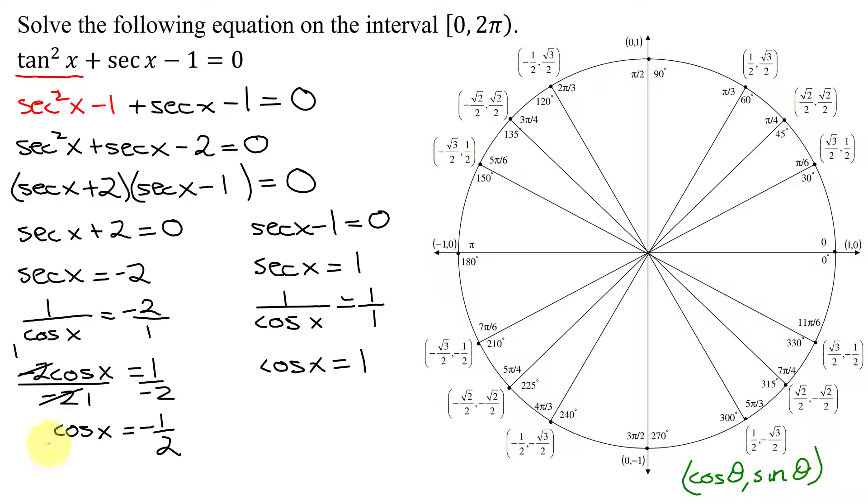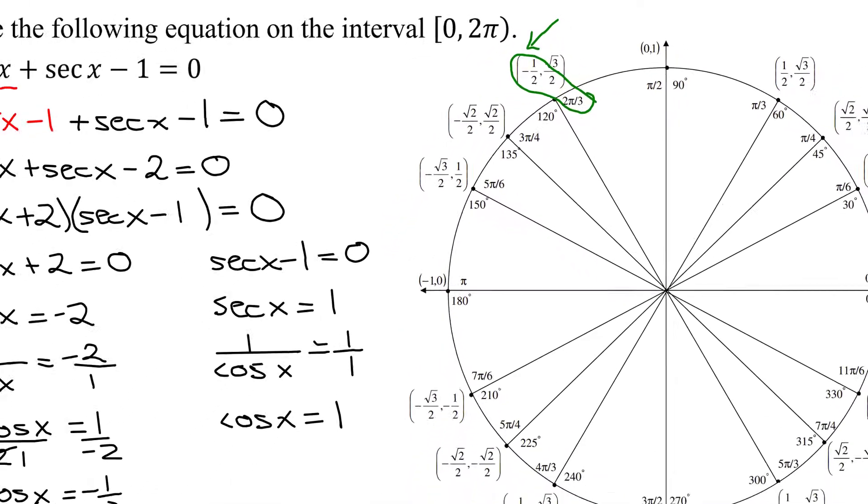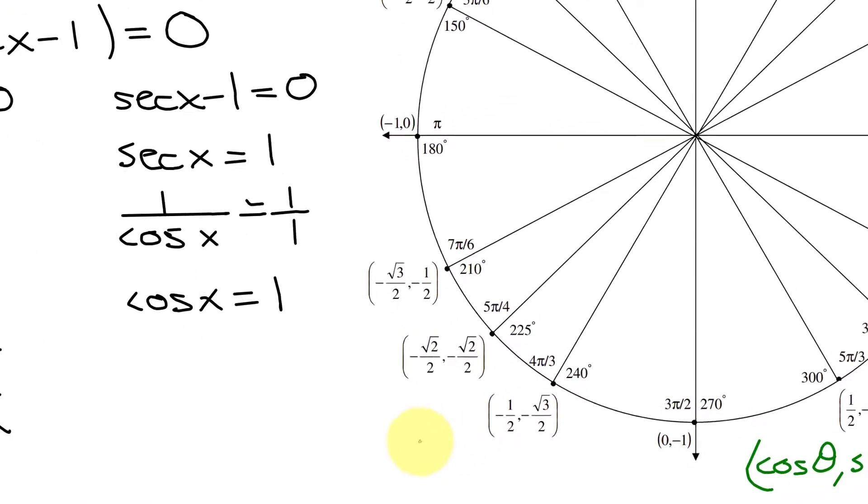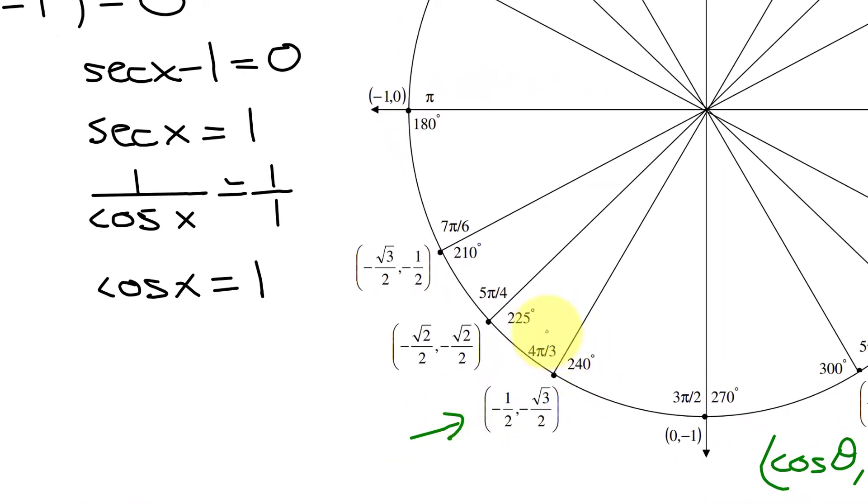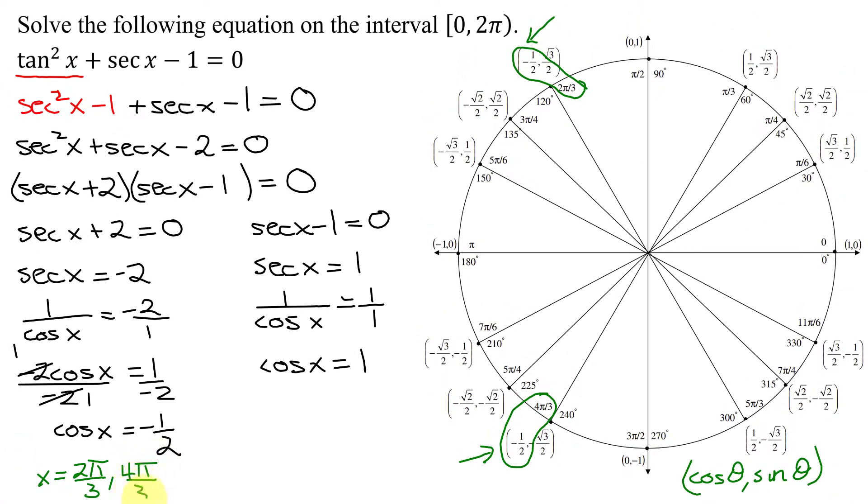So in the first one, I need the cosine of x to be -1/2. That means the x-coordinate has to be -1/2. Since x is negative, it means I need to be in quadrant 2 and quadrant 3. Here, x is -1/2 when my angle is 2π/3. So my first solution is 2π/3. And my second solution is here, when x = 4π/3.